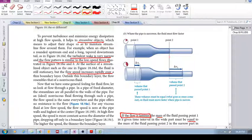If the flow is laminar—it's not turbulent, it's not chaotic—then the amount of mass passing over point one in a given time must be the same amount of mass passing point two.